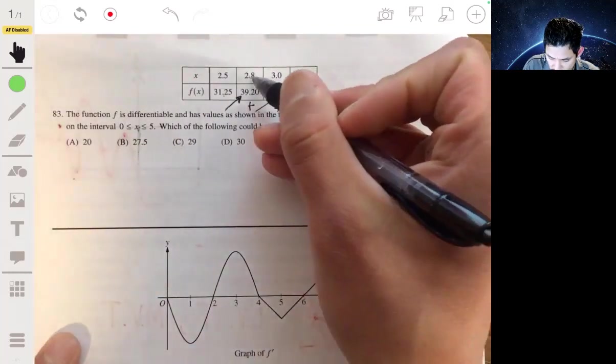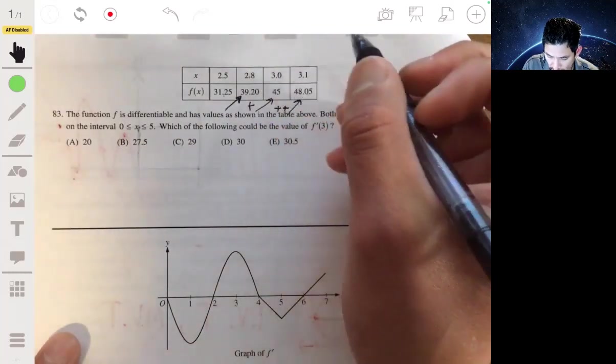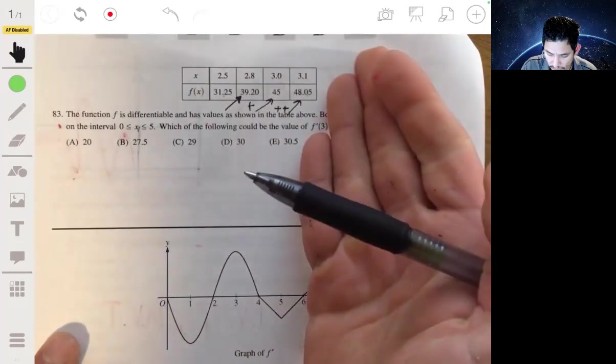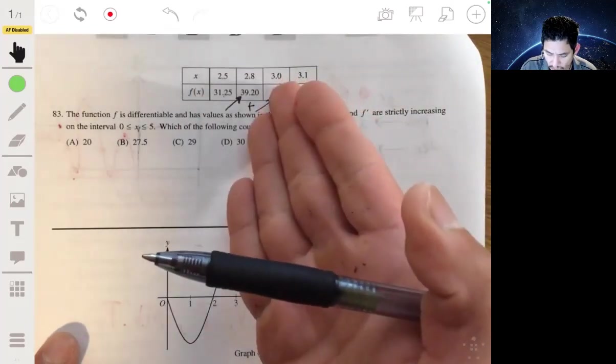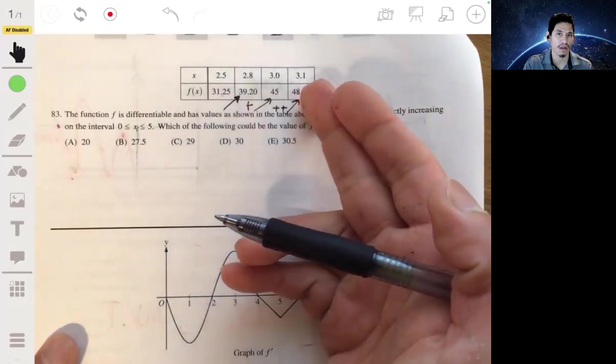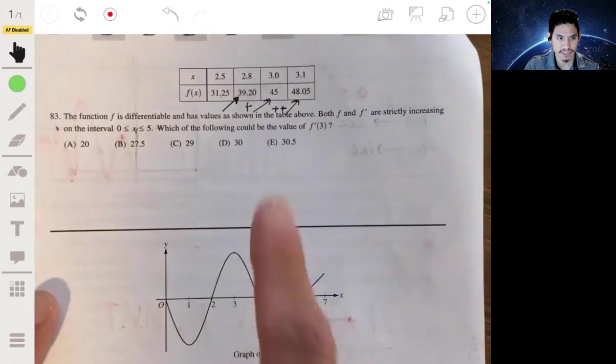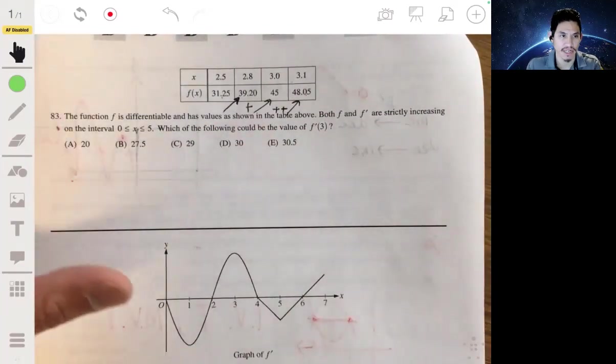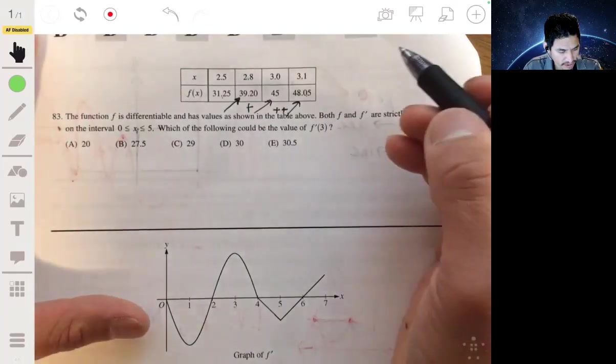What you can do is find the slope between 2.8 and three and between three and 3.1, then compare them and look for the number that's more than the one on the left and less than the one on the right. Let's just do some comparing.